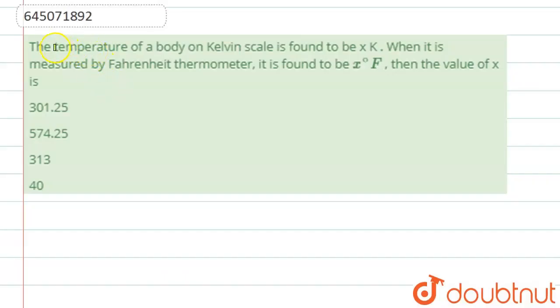Well hello students, now we are going to see this question. The question says that the temperature of a body on Kelvin scale is found to be x Kelvin. When it is measured in Fahrenheit thermometer, it is found to be x Fahrenheit. Then the value of x is.